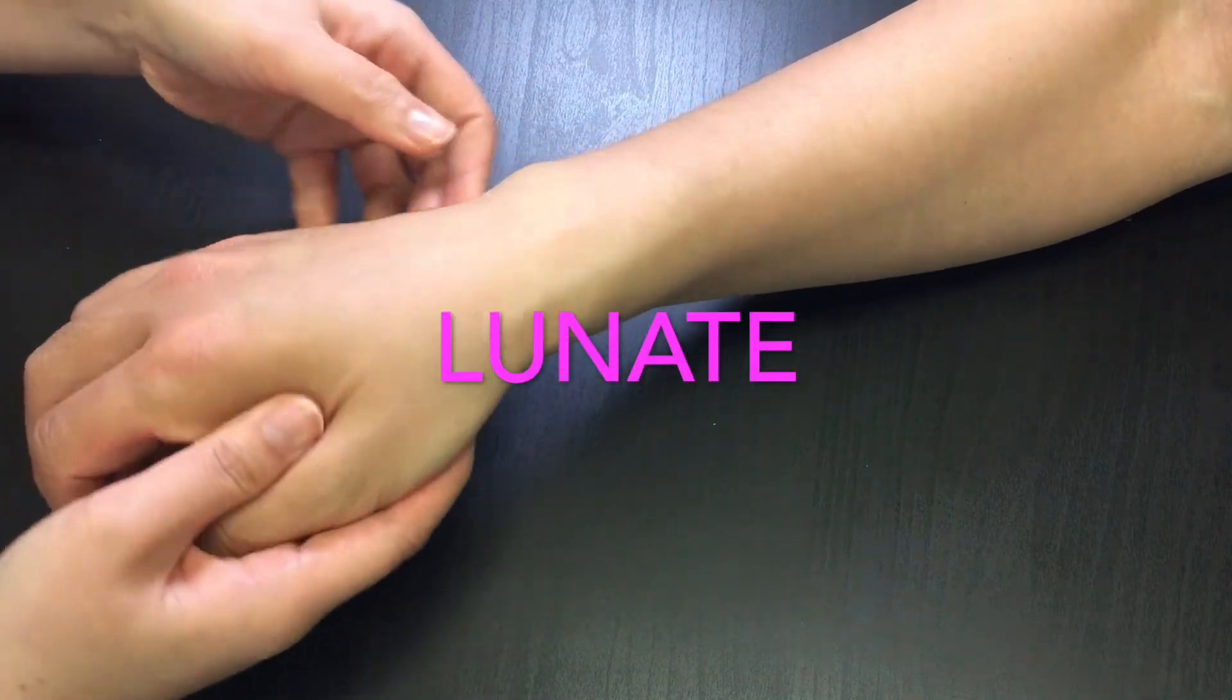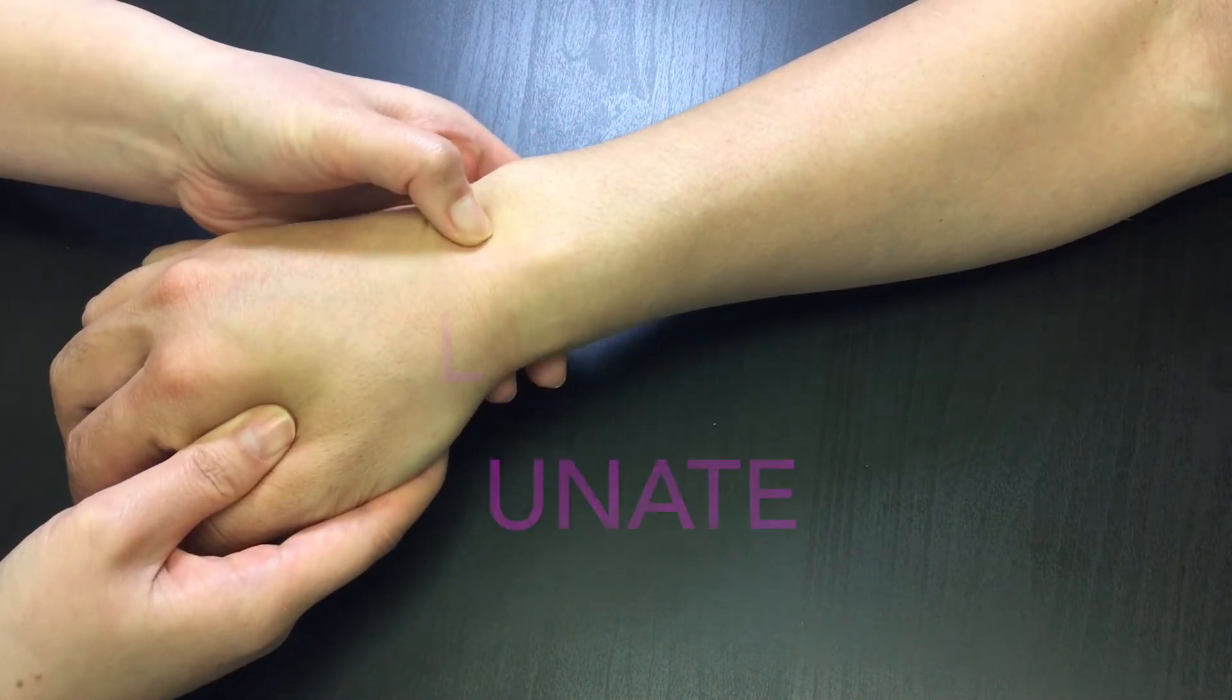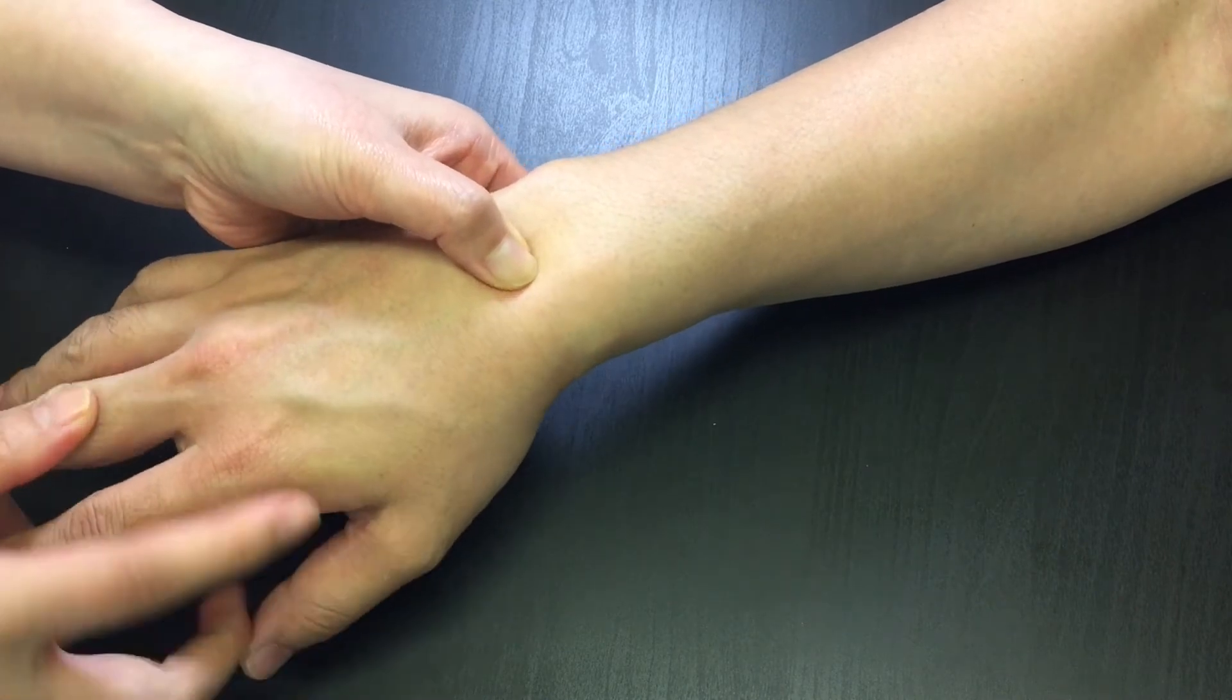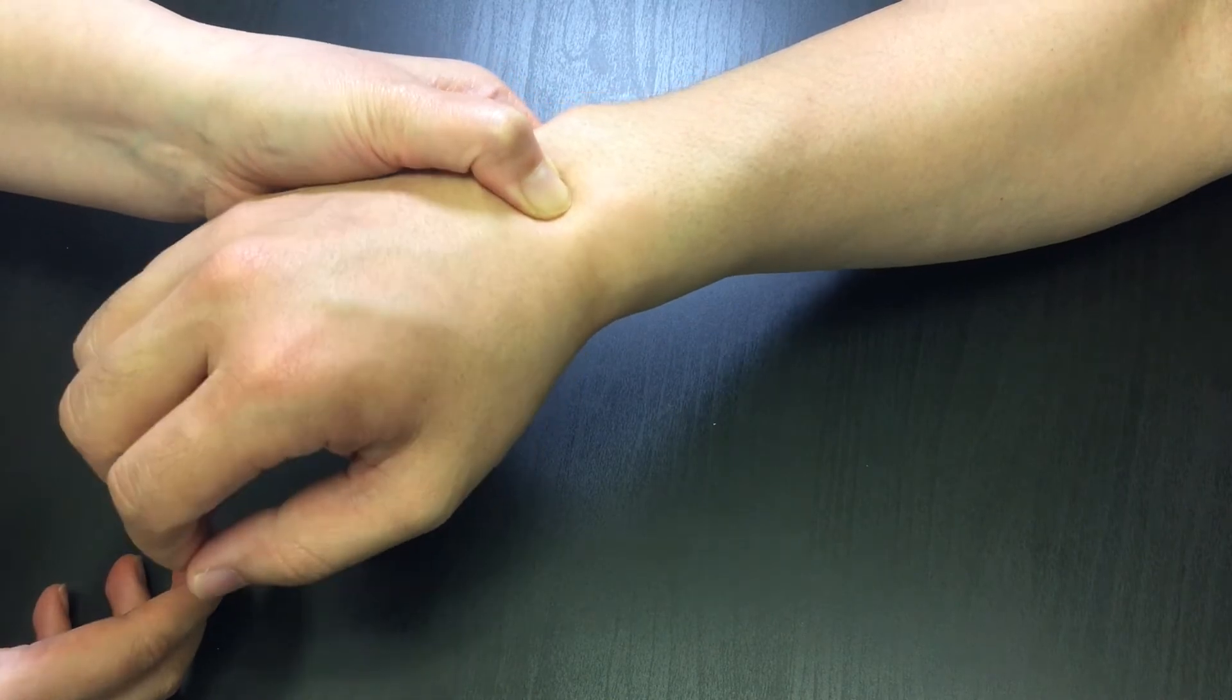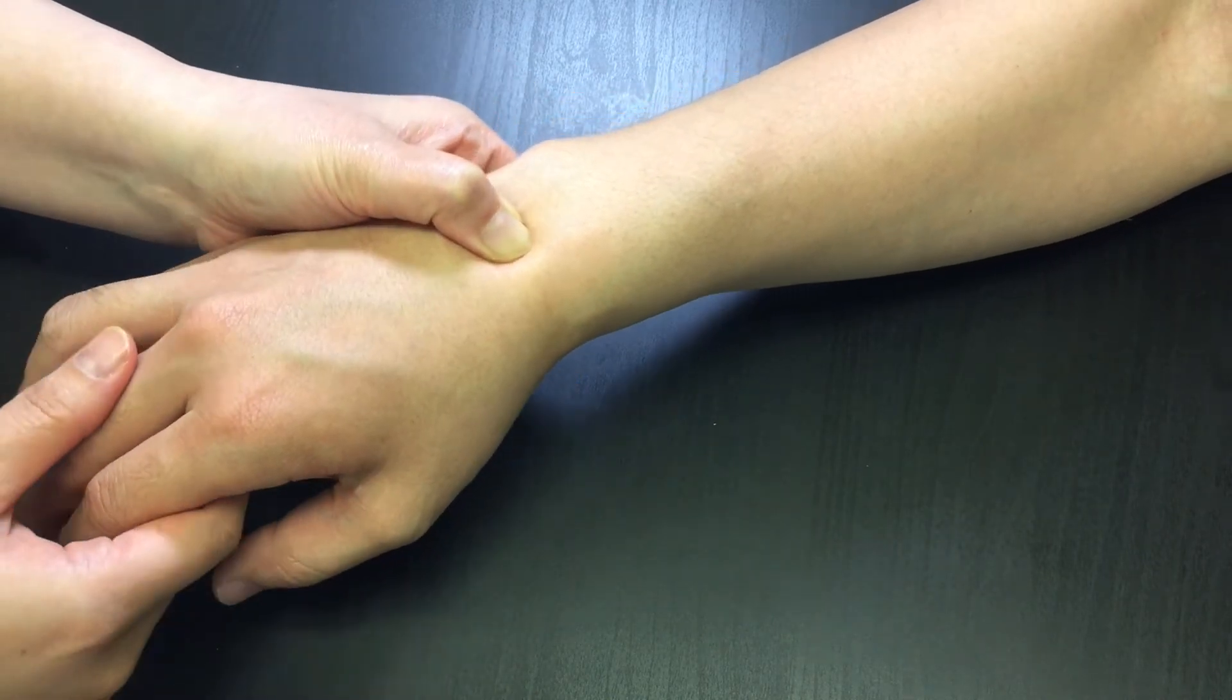Now locate the lister's tubercle and move distally and slightly toward ulna. The lunate is along the same line of middle finger. Move the patient's wrist into flexion and extension and feel for the lunate pressing up into your finger in flexion and disappearing in extension.